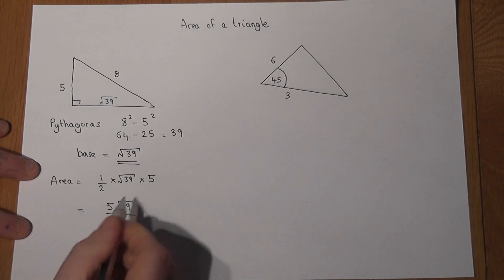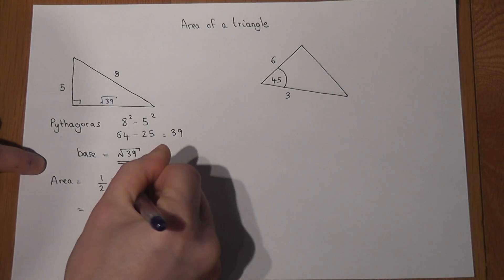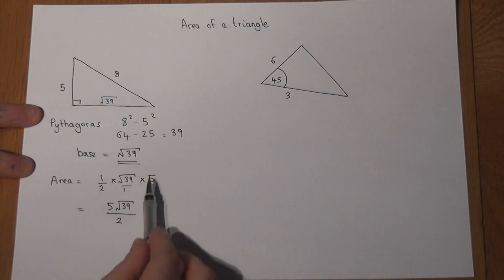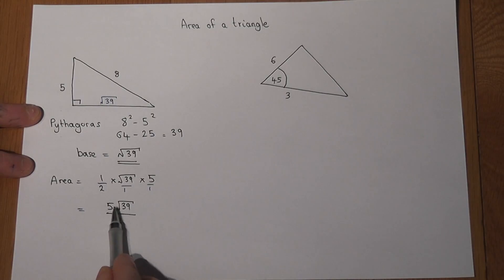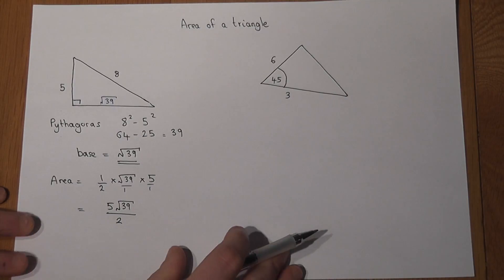And if you can't quite see where that came from, we can imagine these as being over 1. 2 times 1 times 1 is 2, and 1 times root 39 times 5 is 5 root 39. So the area is expressed in surd form.